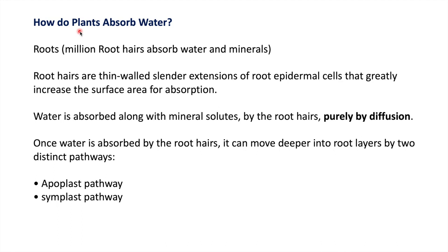How do plants absorb water? We all know that water is absorbed in plants by roots. There are millions of root hairs present on the root which absorb water and minerals. These root hairs are thin, slender extensions of root epidermal cells, and they increase the surface area for absorption. Water is absorbed along with mineral solutes by root hairs purely by diffusion. Once water is absorbed in root hair, water uses two distinct pathways for its movement in root cells: the apoplast pathway and the symplast pathway.